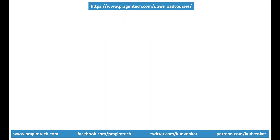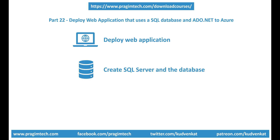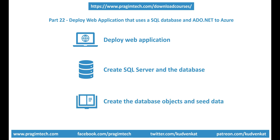In part 22 of this video series, we discussed how to deploy an ASP.NET web application that uses SQL Server database and ADO.NET as the data access framework. This is a three-step process. First, we deploy the web application itself. Second, we create the SQL Server and the database. Finally, we create the database objects like tables, views, stored procedures, etc., and then seed the database tables with initial application data.